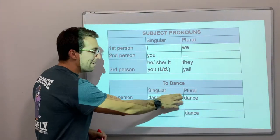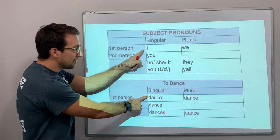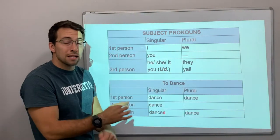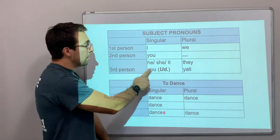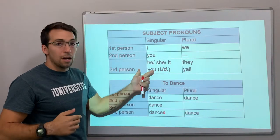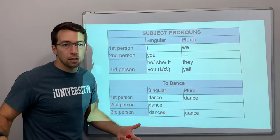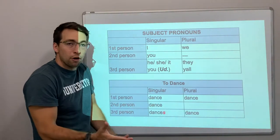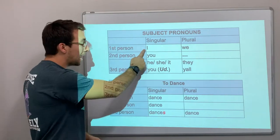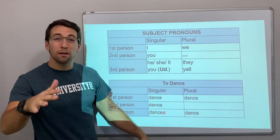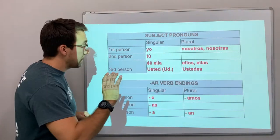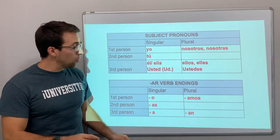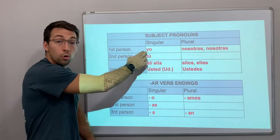In English, we don't have very many conjugation endings that are different. I dance, you dance, we dance, they dance, y'all dance — it's the same word. The only difference is the 's': she dances, he dances. In Spanish, all of those conjugation endings are different and unique, so the endings themselves communicate who is doing the action.